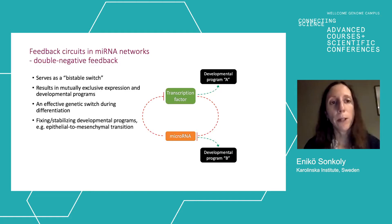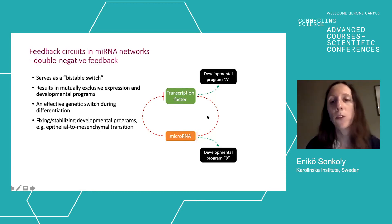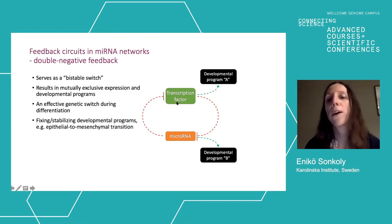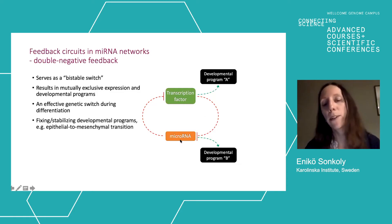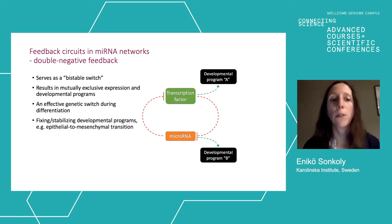Feedback circuits can also be double negative and can serve as bistable switches. For example, when a transcription factor expression is high, it suppresses the microRNA, leading to even higher transcription factor expression, which further suppresses the microRNA — resulting in developmental program A, a very stable switch. Alternatively, if the microRNA is high, it leads to lower transcription factor expression, allowing higher microRNA expression, resulting in developmental program B with high microRNA and low transcription factor. This feedback stabilizes developmental programs.